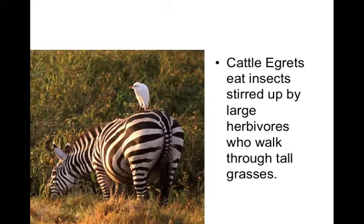Number five: cattle egrets eat insects that are stirred up by large herbivores walking through tall grasses. We've got a zebra here stirring up some insects, and the egret just eats them up. What type of symbiotic relationship could this possibly be?